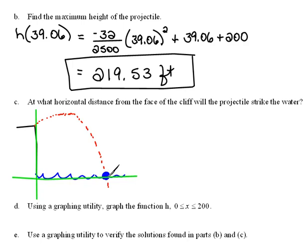Well, what do we know about every single x-intercept? For every x-intercept, we know that the y-value is always 0, which makes sense here because our height is 0. So if we were going to plug this into our equation, that means that 0 would equal negative 32 over 2,500 x squared plus x plus 200.